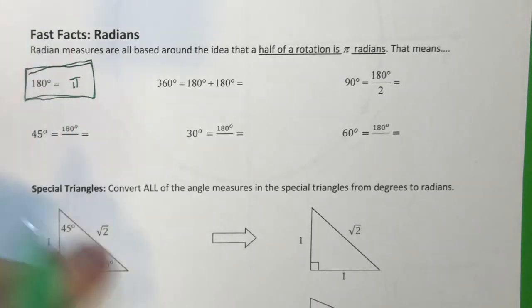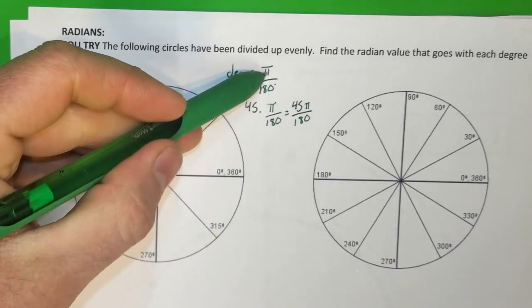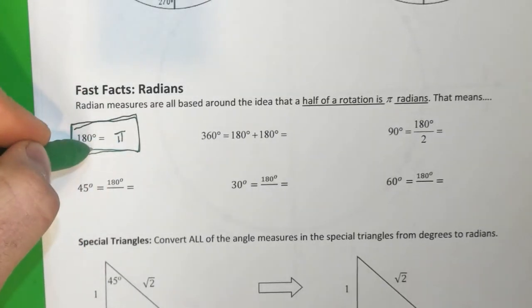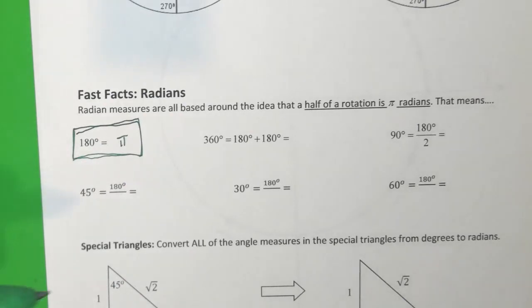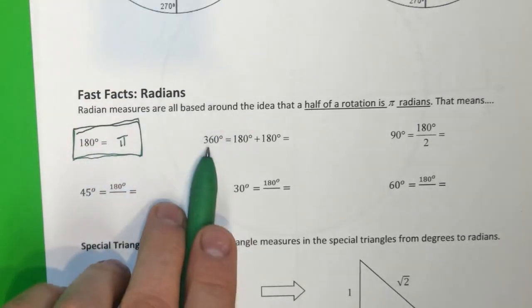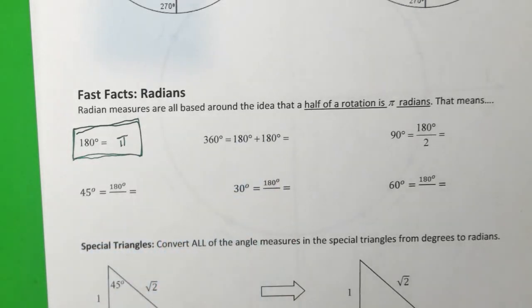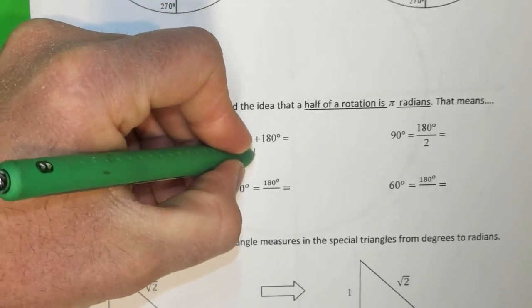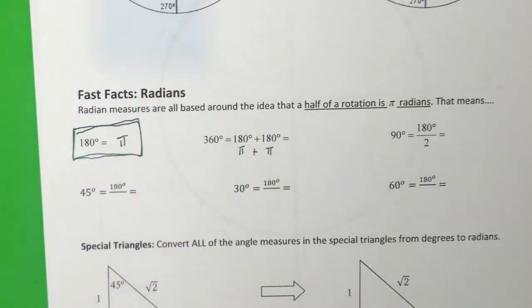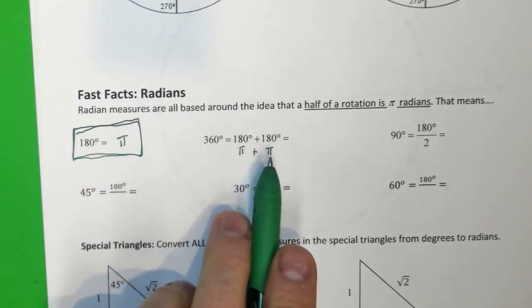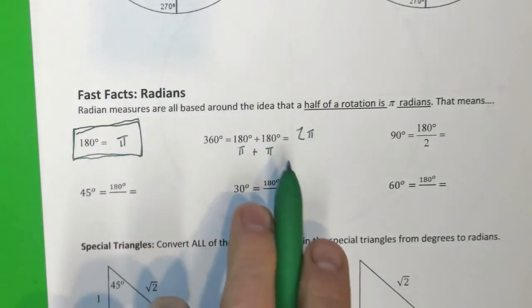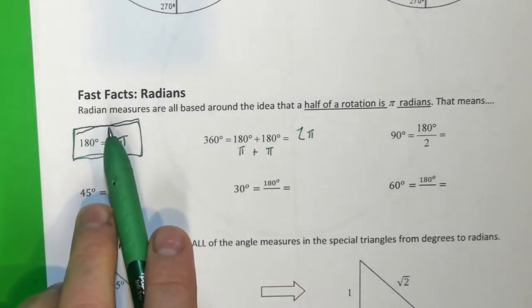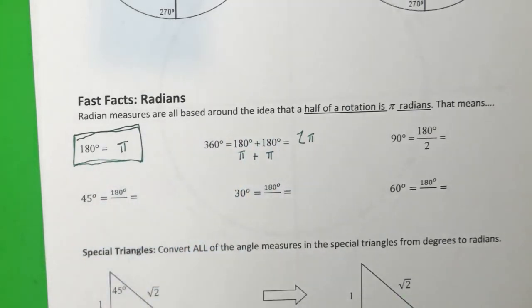That fact is what our whole conversion technique is based around. You'll notice I use pi and 180 together up here because they are equivalent to each other. Once you have that fact, you can leverage it in a whole bunch of different ways. For example, 360 is equivalent to 180 degrees plus another 180 degrees. If each 180 is equivalent to pi, then the radian value for 360 is just pi plus pi, or two pi. Now that's something you can do very quickly in your head without having to reduce fractions at all.